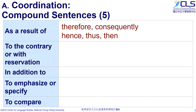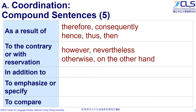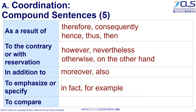To show contrast or reservation, we have: however, nevertheless, otherwise, and on the other hand. To add ideas to the original one, we use 'moreover' and 'also.' When we write 'in fact' or 'for example,' readers will expect us to emphasize, specify, or elaborate our ideas. If we want to compare different aspects, we can also use 'similarly.'